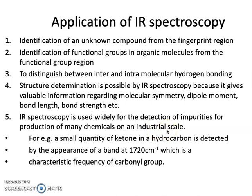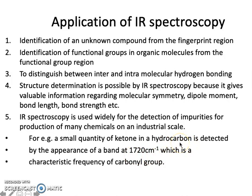When producing chemicals on an industrial scale, impurities are likely present. IR spectroscopy helps detect such impurities. For example, a small quantity of ketone in a hydrocarbon is detected by the appearance of a band at 1720 per centimeter, which is the characteristic frequency of a carbonyl group. Since hydrocarbons have no functional group other than CH, a peak at 1720 per centimeter indicates impurities. These are the applications of IR spectroscopy. Thank you.